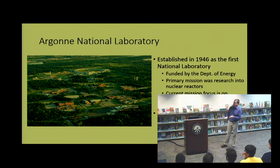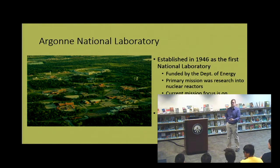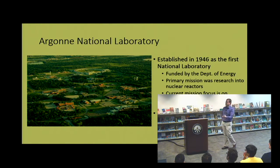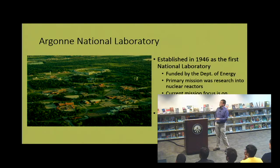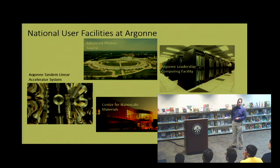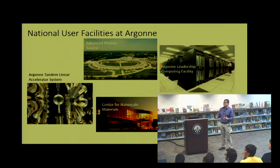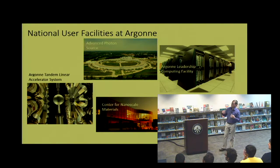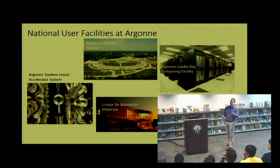There are 15 different research divisions at Argonne that support this mission focus. You can think of these as departments at a university — they have a biology department, a physics division, and a chemistry division. Those divisions are all Argonne employees doing independent research. Also at Argonne, they have five national user facilities — large research facilities with resources that would be too expensive for an individual university to fund on their own, so the national government has stepped in and opened access to researchers within the U.S. and internationally.